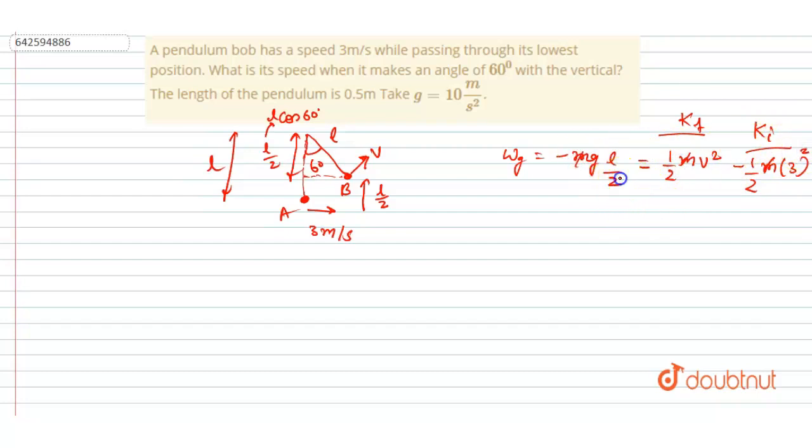Now this L by 2, 2, 2, 2 will also get cancelled, right? Okay, so length of the pendulum is 0.5 and g is 10, so 0.5 into 10 is 5, equals to v square. Yeah, so here is a minus sign also: v square minus 9. So v square will be 9 minus 5, so it will be 4.